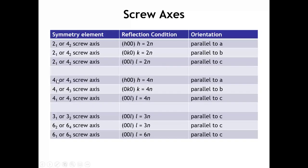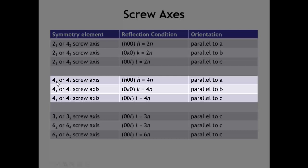When we have screw axes where the subscript divided by the base number is not one-half, we get somewhat different conditions. For a 4₁ screw axis parallel to A, it still affects the H00 reflections, but now we only see peaks where H is a multiple of 4 — so only the 400, 800, 1200. And if we change the orientation of that axis, the affected peaks become 0K0 when parallel to B, and 00L when parallel to C.